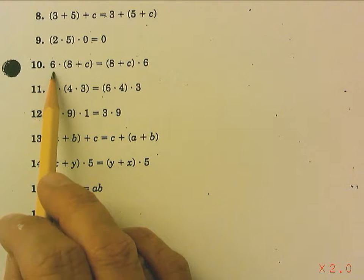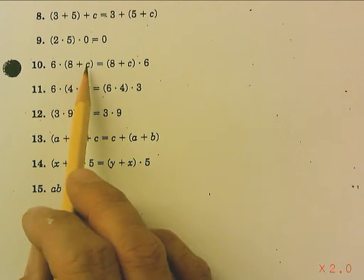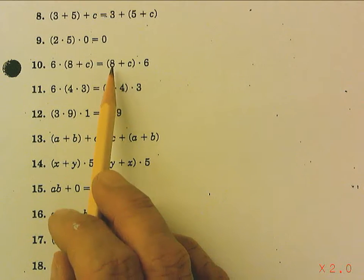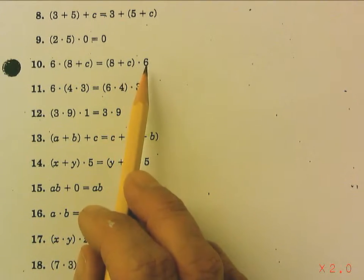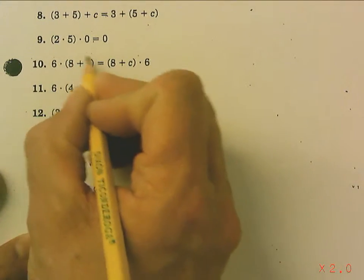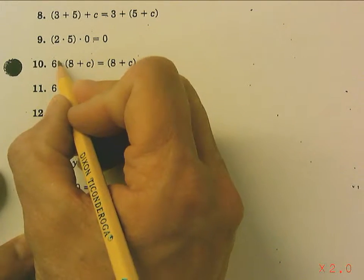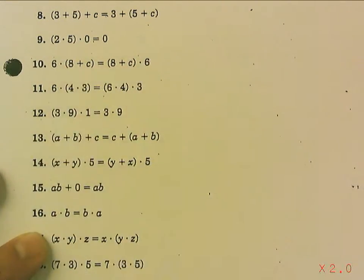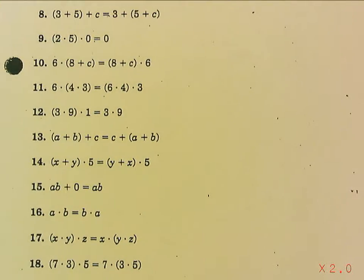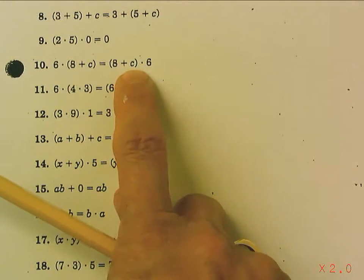But this is 6 times (8+c). And this is (8+c) times 6. So what moved was this expression, 8 plus c, moved with the 6. What operation did it move around? It moved around multiplication. So this is the commutative property of multiplication. That was a tricky one.